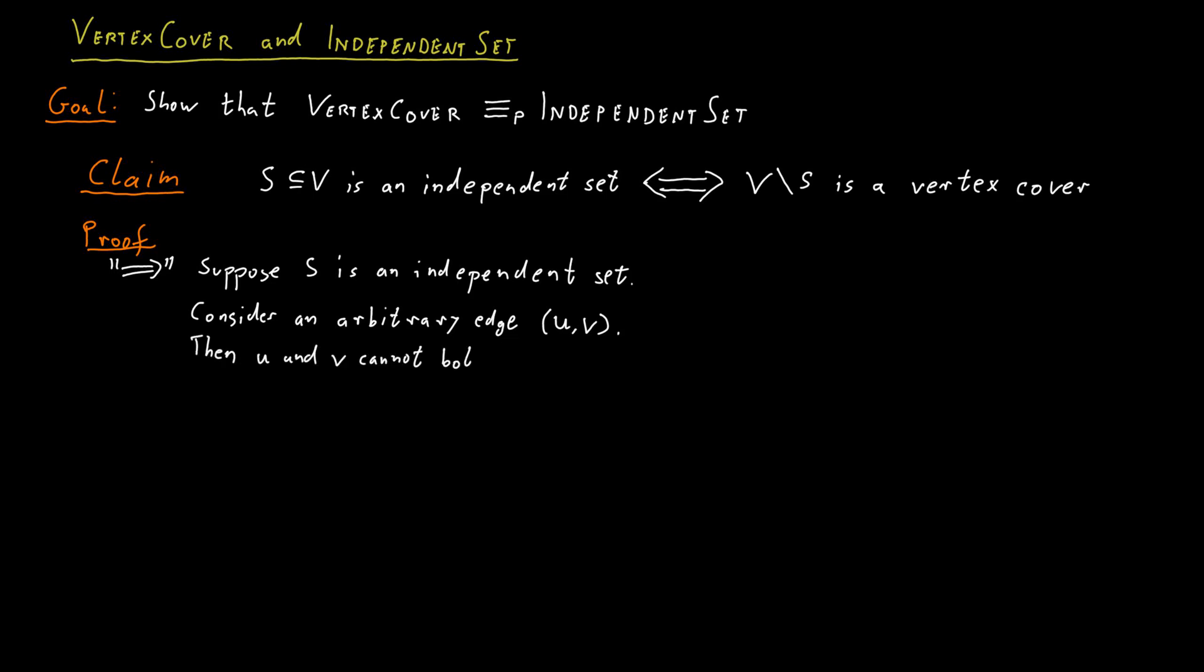This means that either U is in V minus S or V is in V minus S. Therefore, the complement of S has at least one endpoint of this edge. This argument works for any edge in the graph. Therefore, V minus S is a vertex cover, which is exactly the property we need.